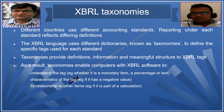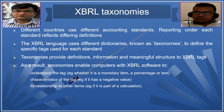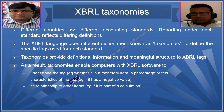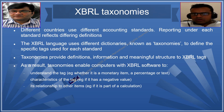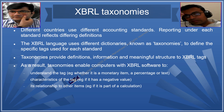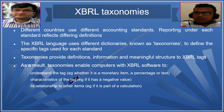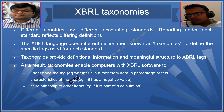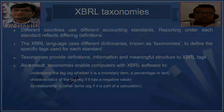People familiar with HTML and XML will understand what tags are. Taxonomies provide more structure than XML. As a result, taxonomies enable computers with XBRL software to understand the tag — what the tag means, what it is doing, what its characteristics are — for example, does it have a negative value? These things are missing in XML and HTML. There is something extra going on in XBRL, including the relationship of items to each other and whether an item is part of a calculation.